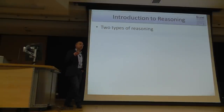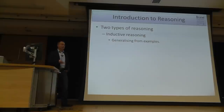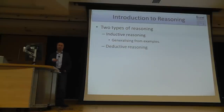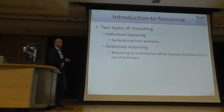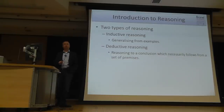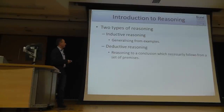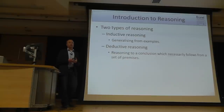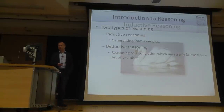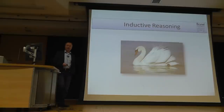There are traditionally at least two types of reasoning. One type is called inductive reasoning, where we generalize from examples. And then we have deductive reasoning, where we have a set of premises and from these premises we derive a conclusion. These types of reasoning are not specific to psychology — they apply to mathematics and philosophy as well.